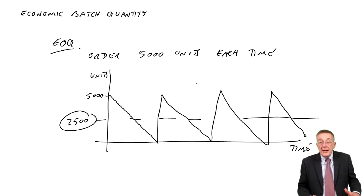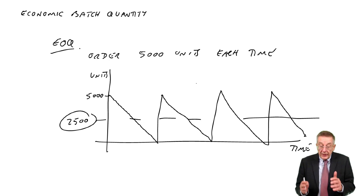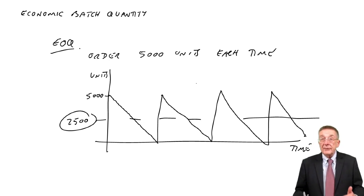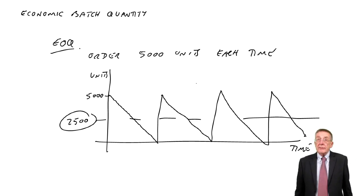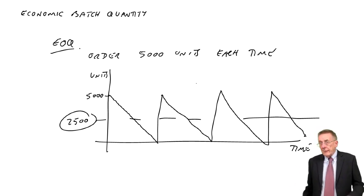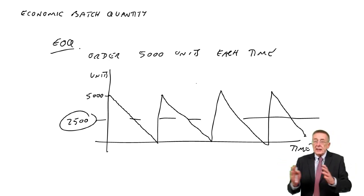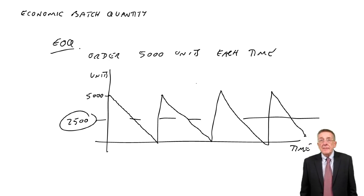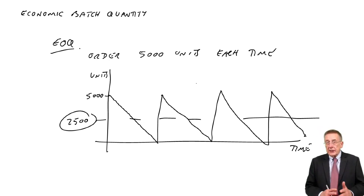Although proving the EOQ formula isn't in the syllabus, part of the proof does always assume that the average inventory would be half of the order quantity. But that's what we're ordering from a supplier — ordering 5,000 perhaps every month, and every month exactly 5,000 suddenly arrive. Economic batch quantity is the same sort of idea, except we're ordering from our factory.